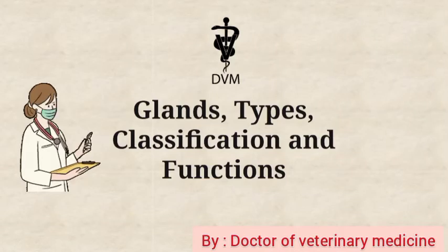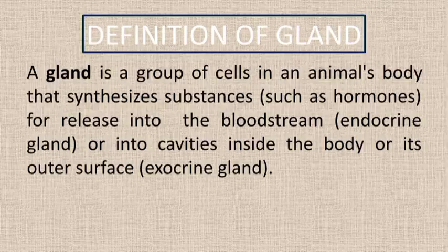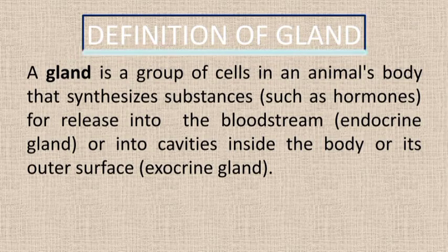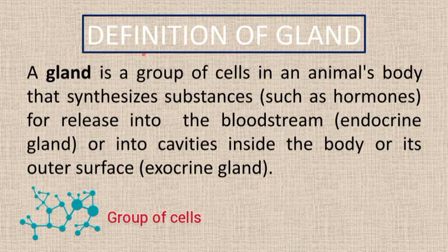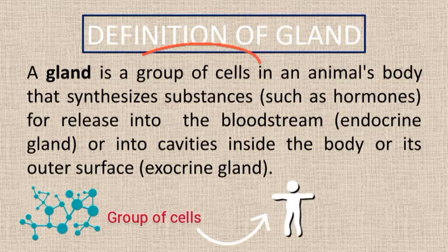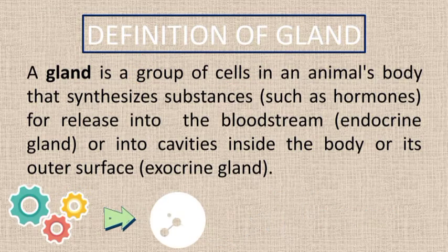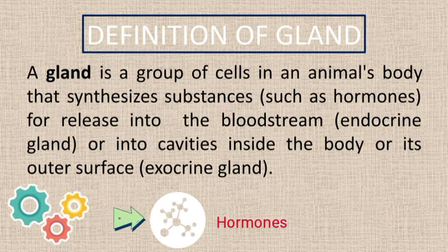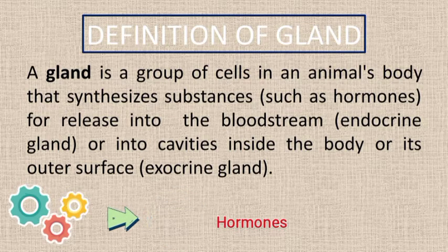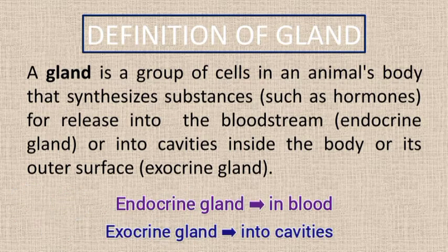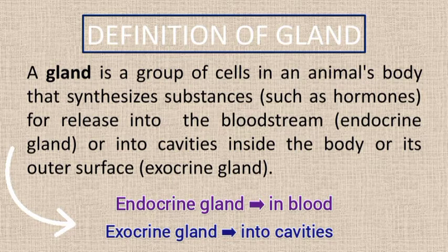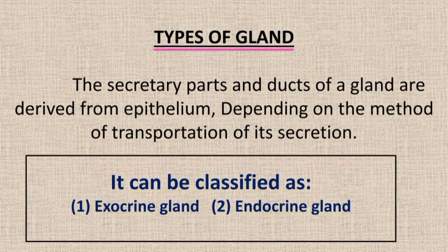Let's discuss glands, their types, classification and functions. A gland is a group of cells in an animal body that synthesizes substances such as hormones. These hormones either release into the bloodstream or into cavities inside the body.